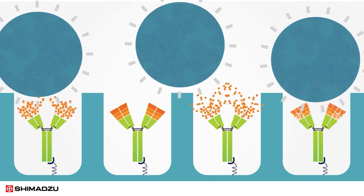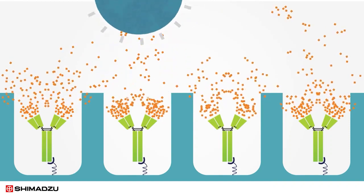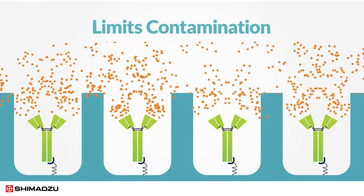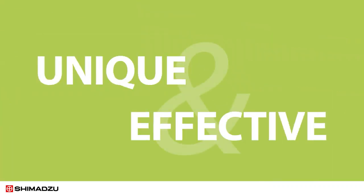In this way, only the FAB region of the antibody is exposed to the trypsin. This selective digestion of FAB peptides decreases sample complexity and limits contamination from excessive proteolysis. It's one of the things that makes NSMAL truly unique and effective.